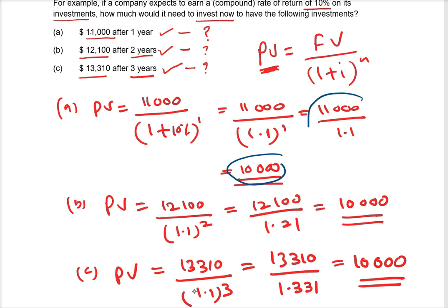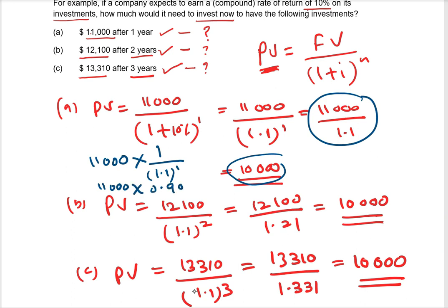Further, we can calculate this using the interest factor. Instead of dividing by 1.1 to the power one, you can write it as eleven thousand multiplied by one over 1.1 to the power one. If you simplify this, that is eleven thousand multiplied by 0.909, which gives you ten thousand. This is called the discounting factor, and you can identify it through the discounting table.